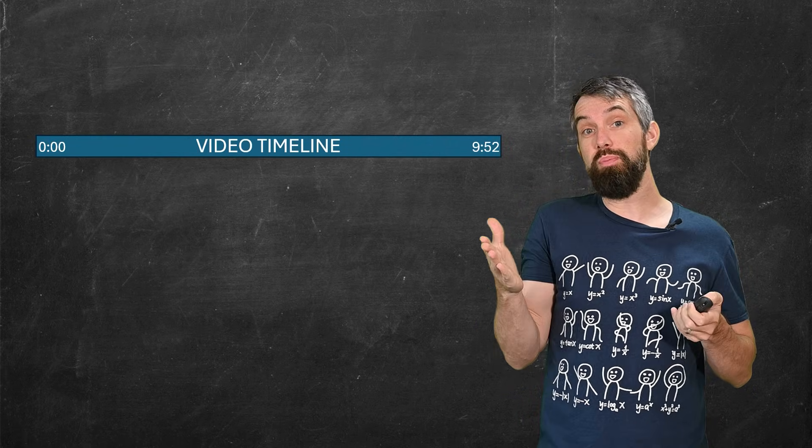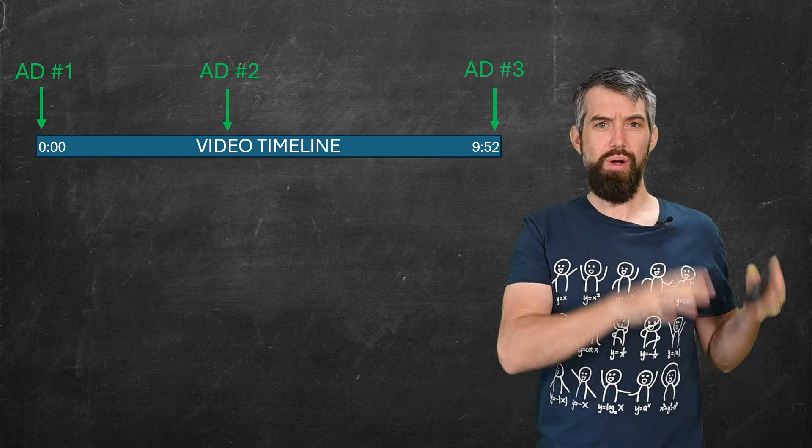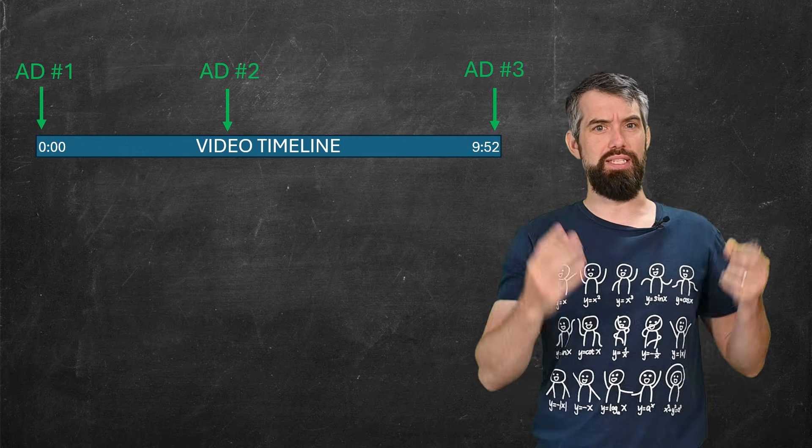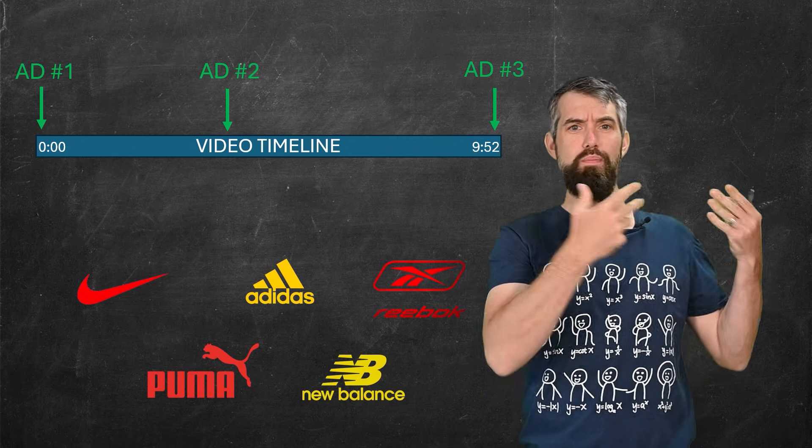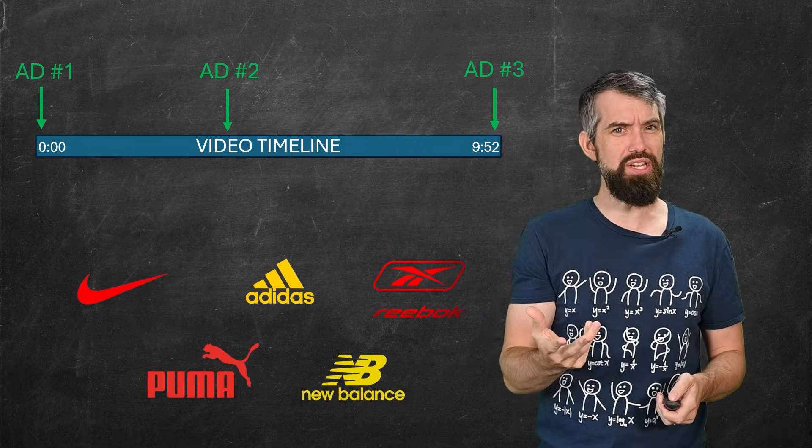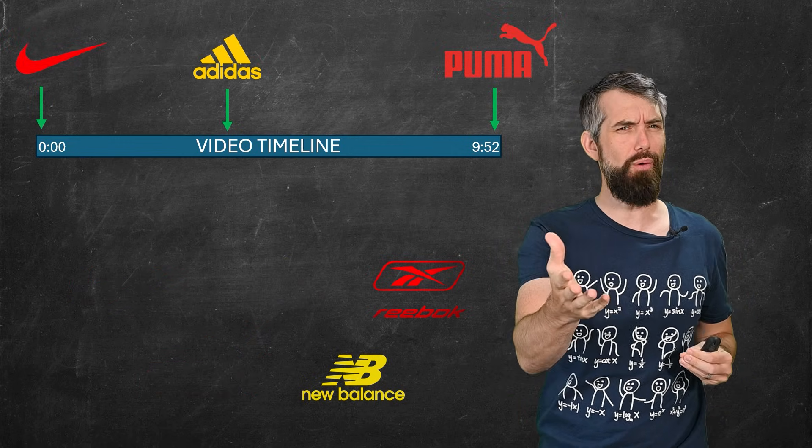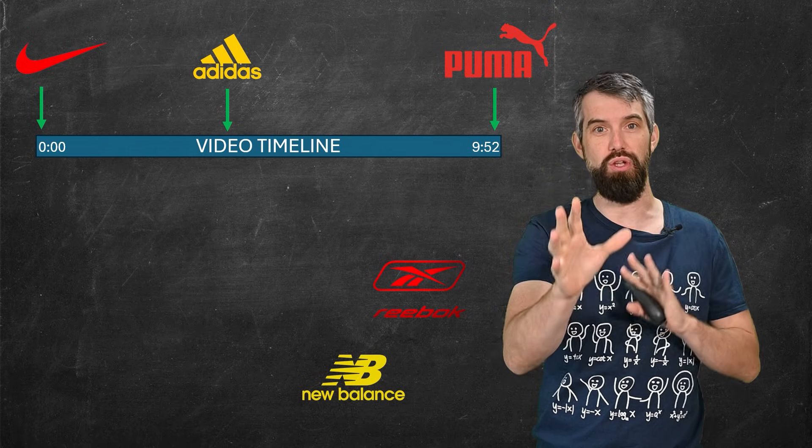If you're watching a YouTube video as it plays, there's usually multiple ads throughout the video. But the question is, if this was a video about, say, sneakers, and you looked at all of the sneaker companies who might want to advertise, how do you match up which sneaker company is getting which of the different spots in the video, all in a way to try to maximize the revenue for YouTube?